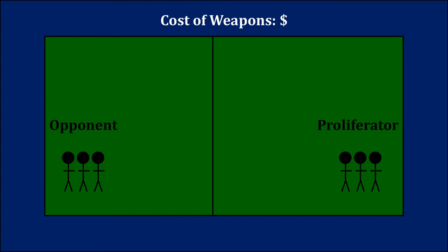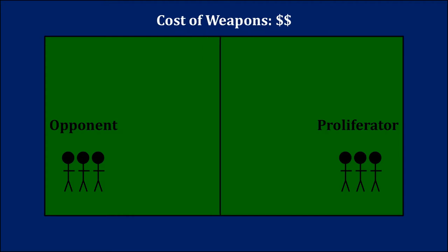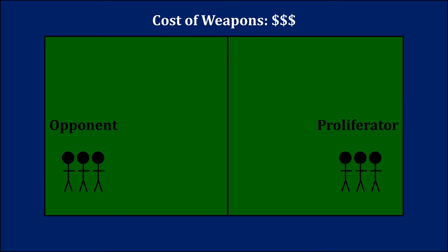Those nuclear weapons are costly, and because of that cost, the deal implemented pre-nuclear weapons is going to be relatively similar to what we observe in a post-nuclear weapons world, provided the cost of those weapons is cheap. As that cost goes up and up, the opponent can leverage the fact that the potential proliferator has a less attractive nuclear option. So as that cost increases, the distribution of the policy in dispute is going to more favorably land on the opponent's side.